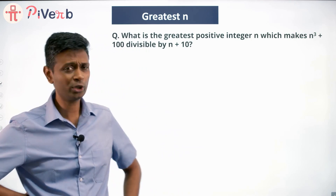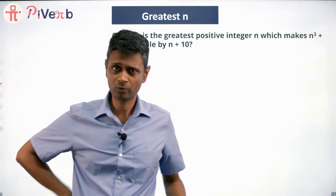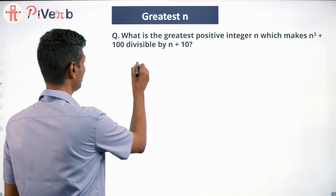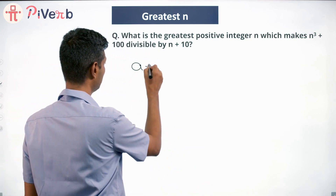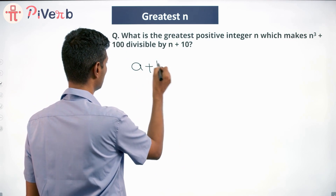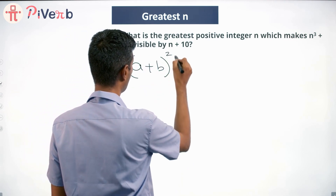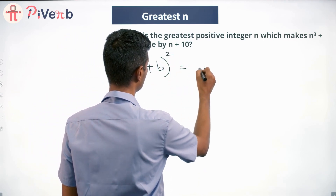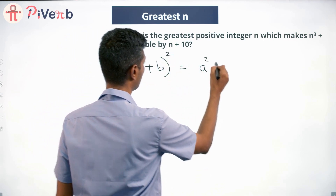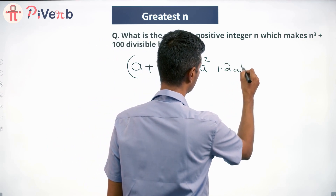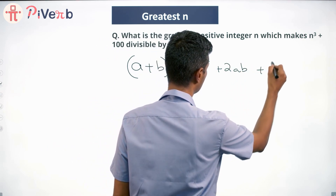Before we jump in and solve this, I want you to learn some algebra. You have a plus b — put (a+b) square — this is a squared plus 2ab plus b squared.